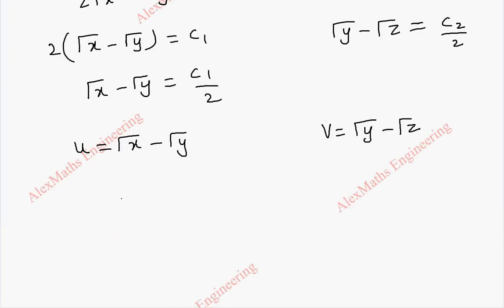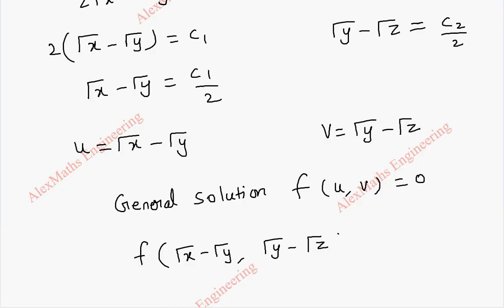Now, using this, we can write the general solution. The general solution is f of u, v equal to 0. So f of root x minus root y comma root y minus root z equal to 0.